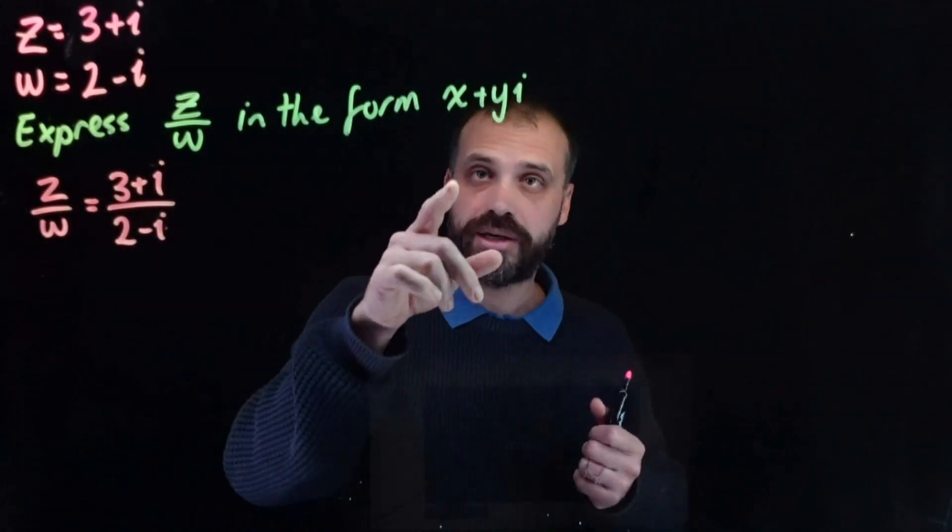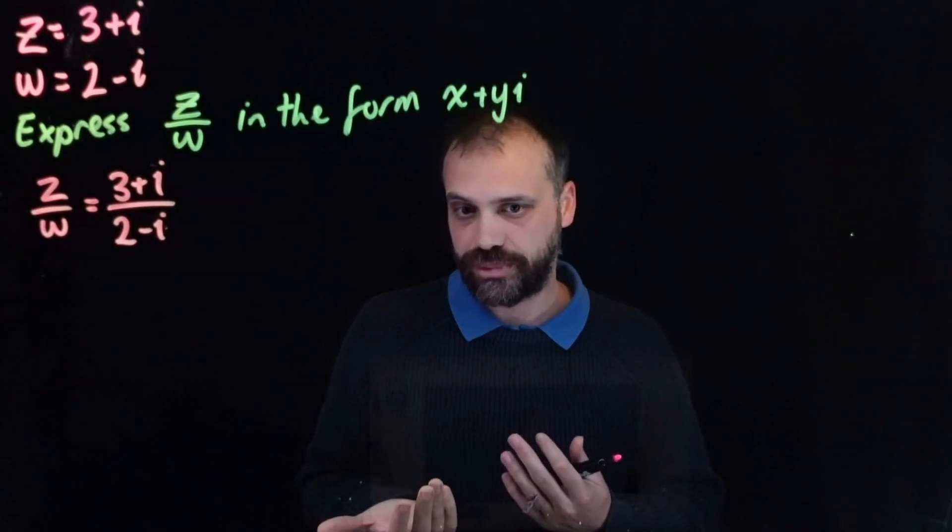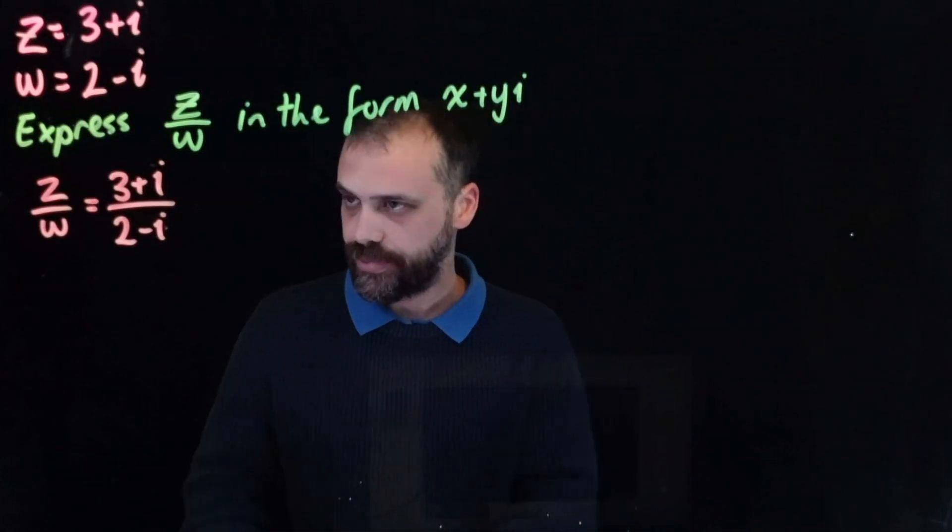Now, x is just a number, yi is just a number. So express it as a complex number the way that we normally express complex numbers. That's what it says.